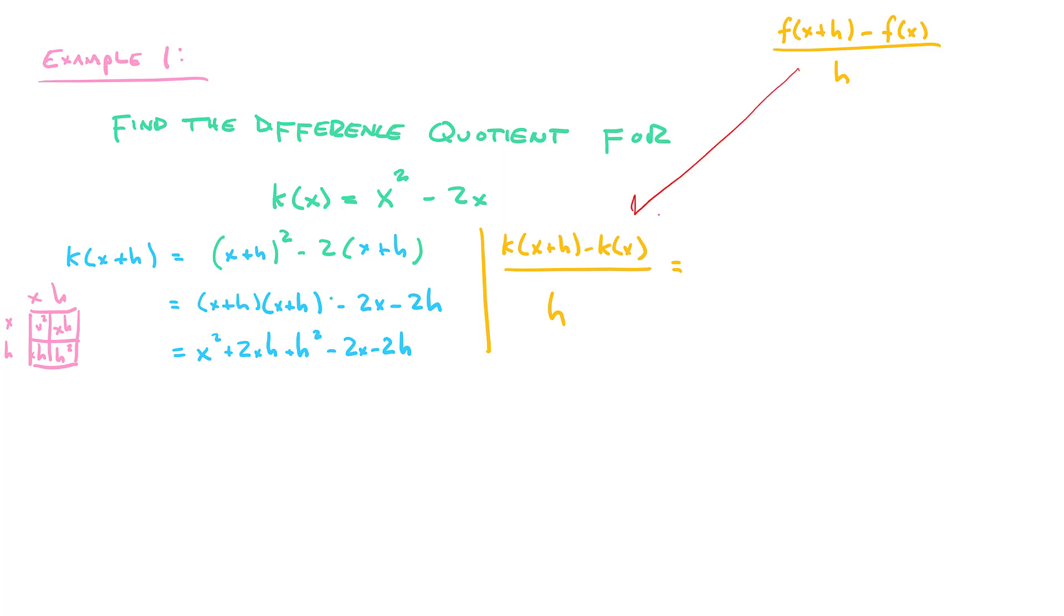And so if we specify this thing for k of x, we can now substitute k of x plus h with this thing, the thing that we just found, which looks like this. k of x, we actually already know. It's right here. So let's replace k of x with x squared minus 2x, which is what it is, and we get something that looks absolutely insane. This looks terrifying, but it's going to simplify, and that's our next goal.